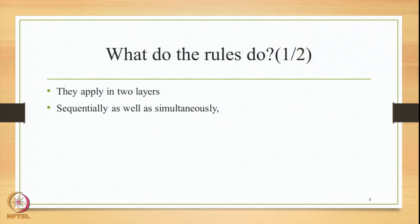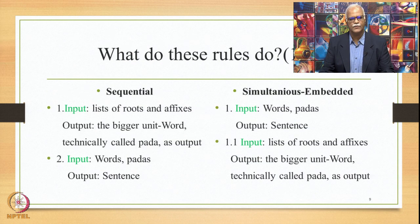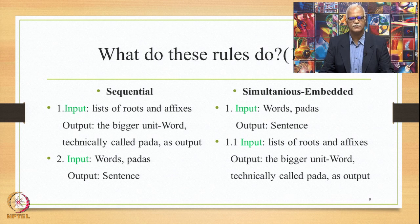What do these approximately 4,000 rules do? They apply on the input in two layers: sequentially as well as simultaneously. As far as the sequential application is concerned, the input is the lists of roots and affixes, and the application provides an output — namely the bigger unit, the word, technically called pada. Then it takes the words or pada as input and returns a sentence as output. Rules apply sequentially: first, words are generated from the list of roots and affixes, and then the sentence is generated from the words.